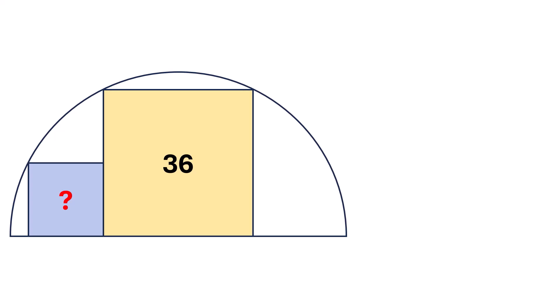We're told that the area of the large square is 36 square units. That means its side length equals the square root of 36, which is 6 units. Now, suppose this point is the center of the semicircle. Since the square is 6 units wide, the center lies right in the middle, dividing the base of the square into 3 units on each side.